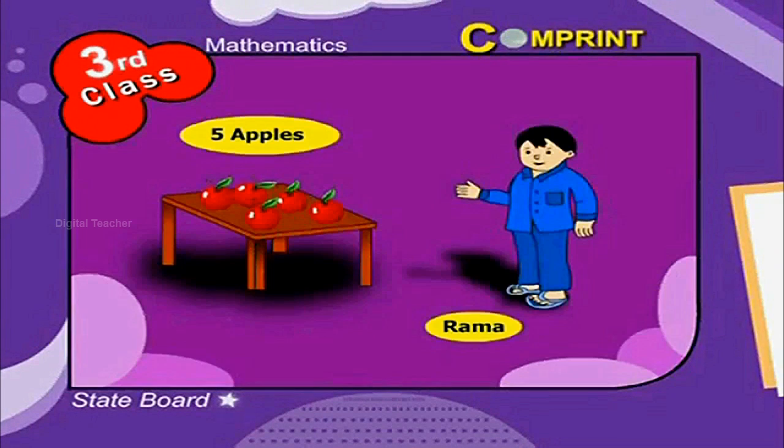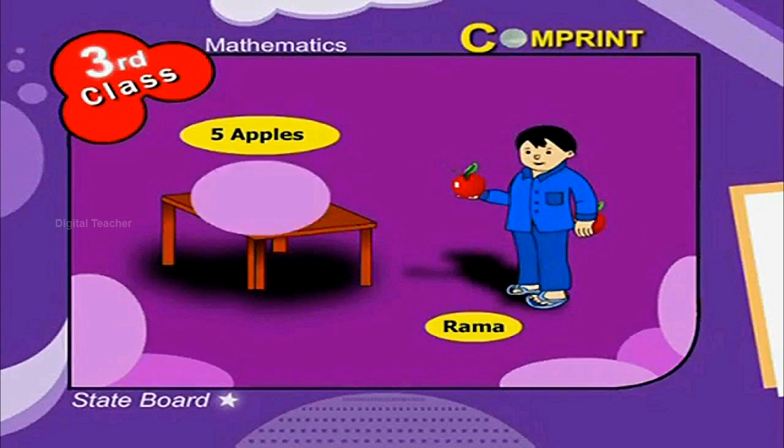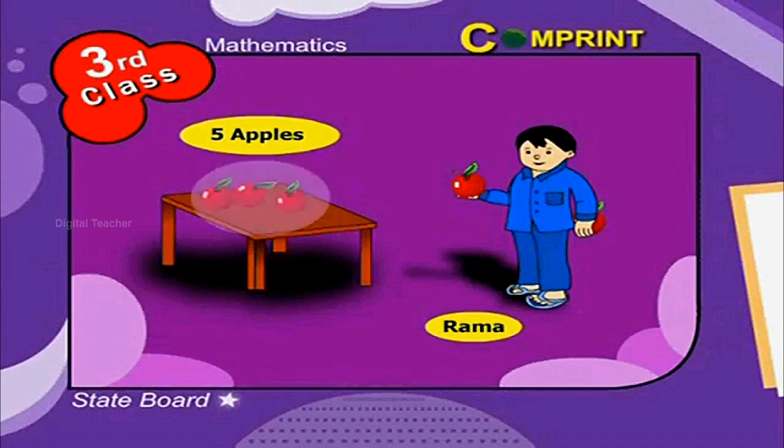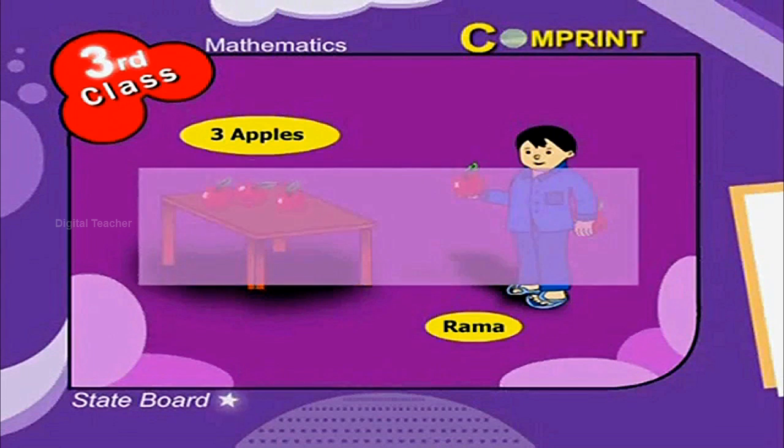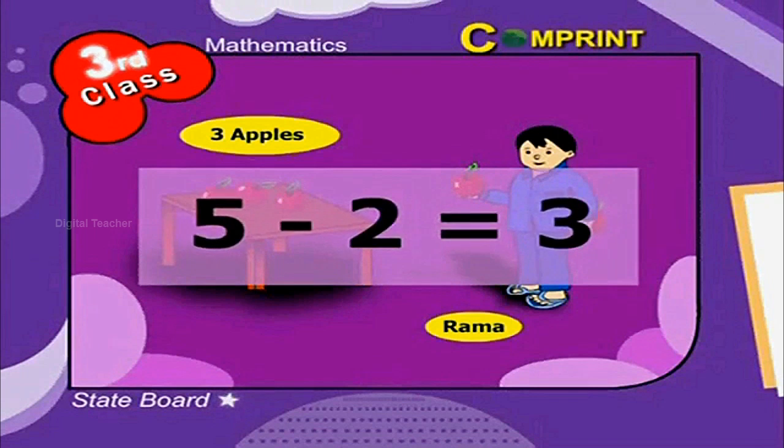Subtraction. There are 5 apples on the table. Rama took 2 of them. Therefore, the number of apples remaining on the table is 3. 5 minus 2 is equal to 3.